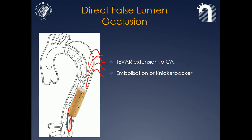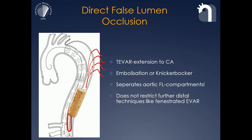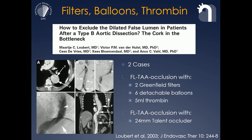What I'd like to show you is some techniques of obstructing that backflow, either with embolizing materials or a technique that we call the Knickerbocker technique, and most importantly, all these techniques do not restrict any further distal endovascular repair like fenestrated or branched endografting. This is the first publication on that topic, and in two cases of co-indissection, the authors used a long list of interesting materials like vena cava filters, detached balloons, etc., to obstruct the false lumen, and they have been successful with it.